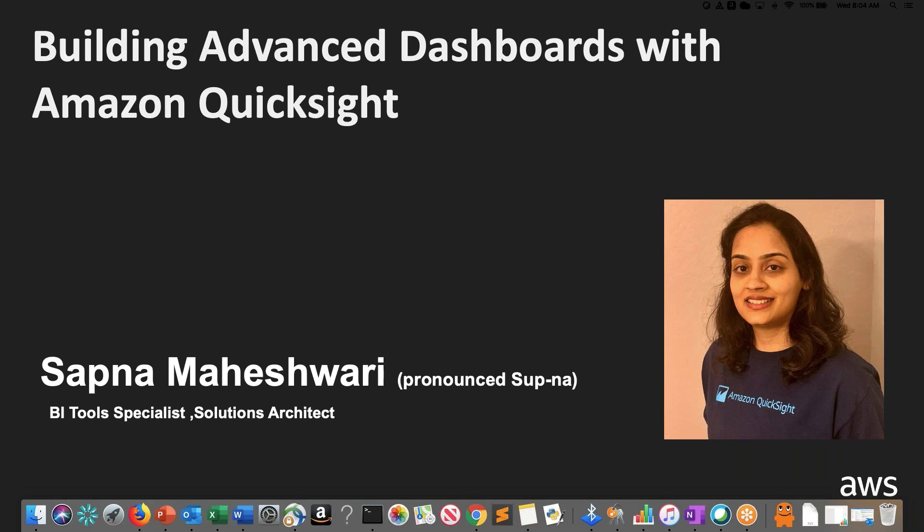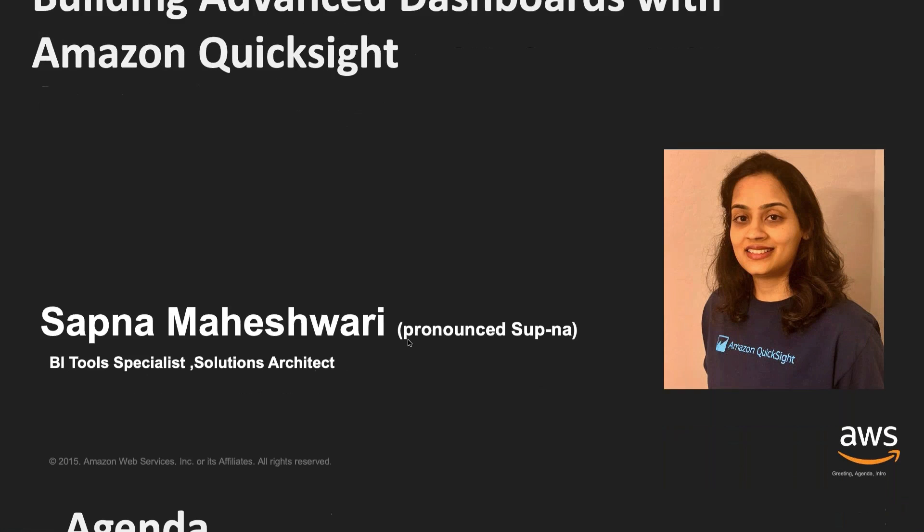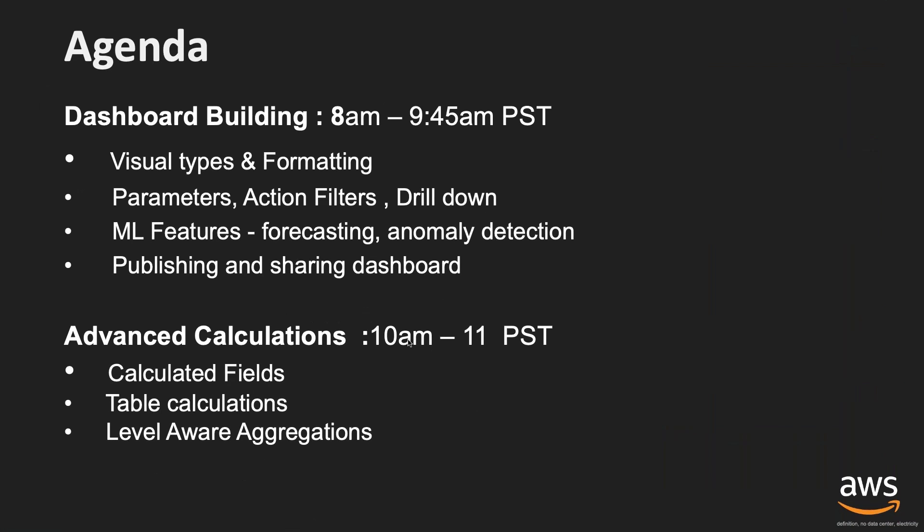Here is the agenda. Starting now up to 9:45 a.m., we'll be doing QuickSight 101 exercises — creating various visuals and formatting them, adding interactivity using parameters, action filters, and drill down. We also go over machine learning features: forecasting and anomaly detection. Finally, we will be publishing and sharing the dashboard, including how dashboards can be emailed to users on your account.